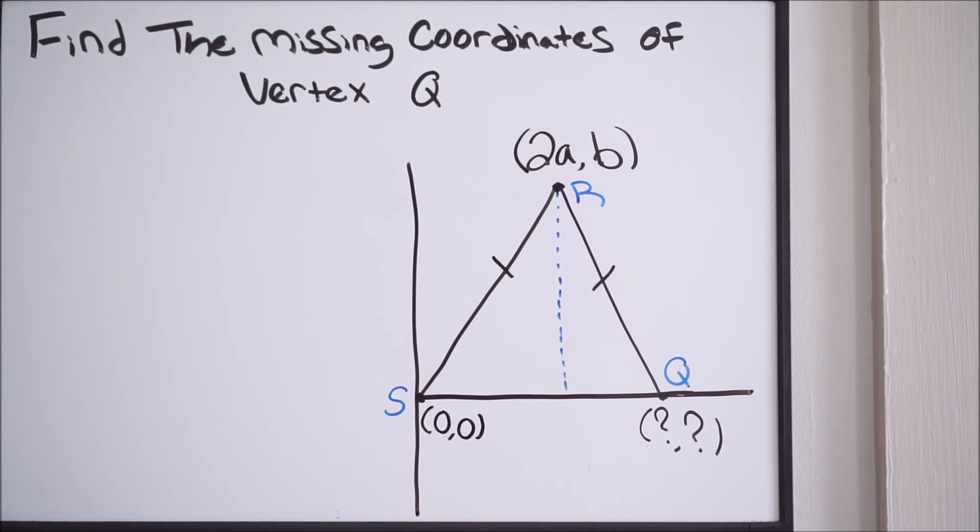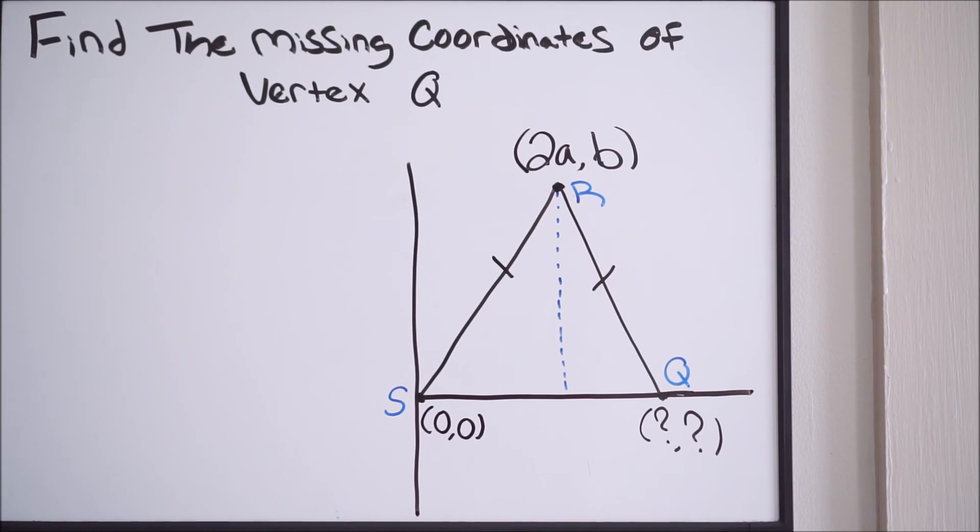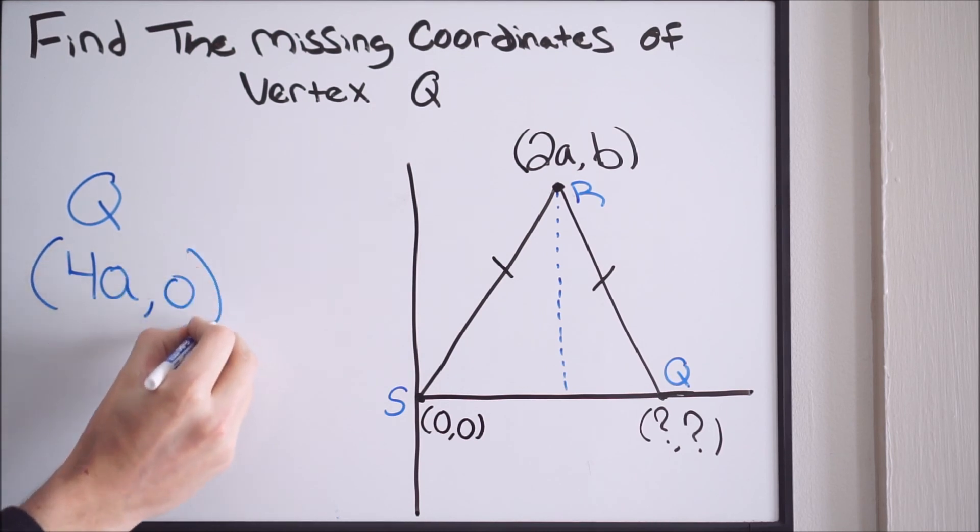So knowing that, all we have to do is simply double our X value here. Our X value is 2A. If I simply double that, that's going to be 4A. So vertex Q, we're going to have the following coordinates: 4A and then 0. And that is it.